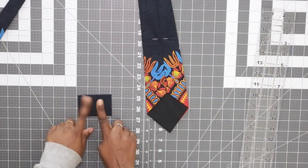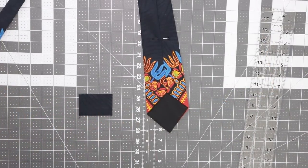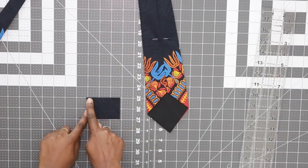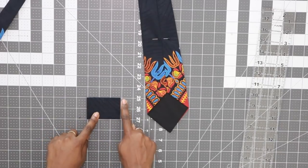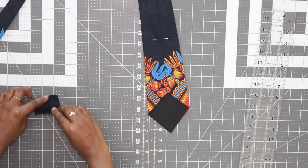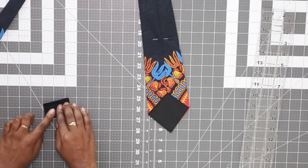Lastly we need to make the tie keeper. So my rectangle measures 3 inches by 2 inches. To hide the raw edges of my tie keeper, the first thing that I did was fold in the shorter side, the 2 inch side.